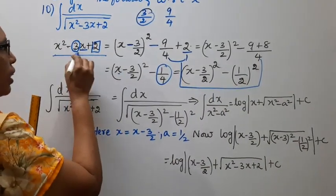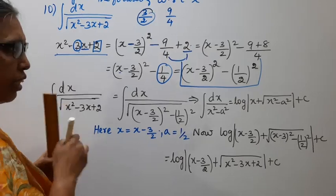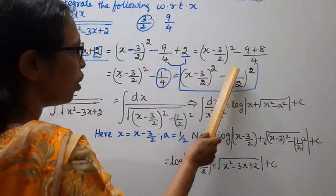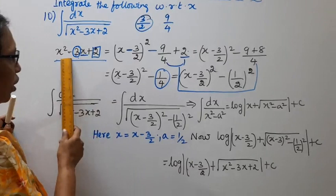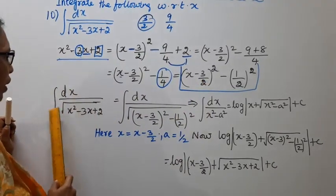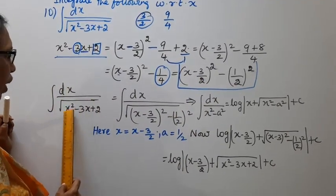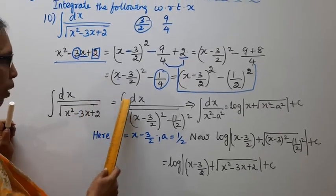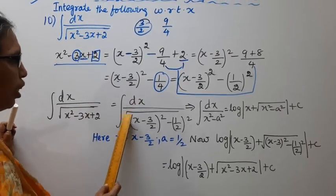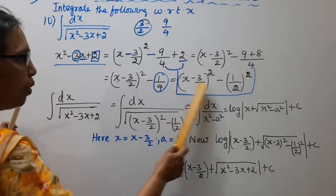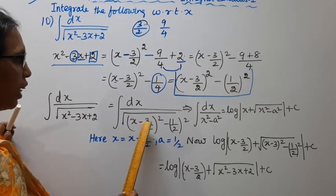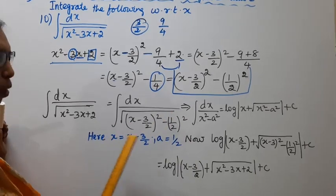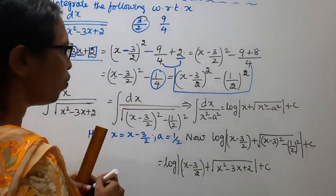Now, x square minus 3x plus 2, when you have minus, equals x minus 3 by 2, the whole square, minus 1 by 2, the whole square. So the question — integration of dx by square root of x square minus 3x plus 2 — becomes integration of dx by square root of x minus 3 by 2, the whole square, minus 1 by 2, the whole square.